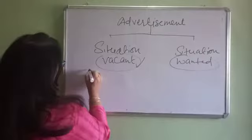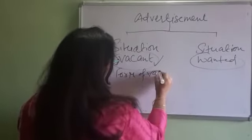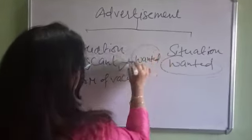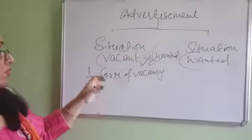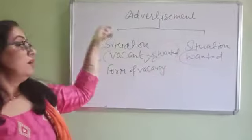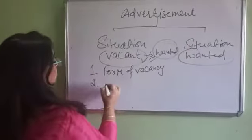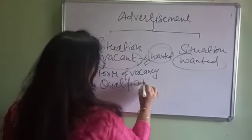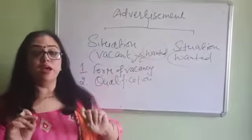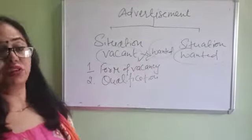Now, thinking about the points for situation vacant: the first thing is the form of vacancy — which kind of vacancy is there. It starts with 'wanted', meaning which kind of candidate they want. For example: 'wanted a teacher', 'wanted a receptionist', 'wanted a manager', 'wanted an accountant'. The second thing is about the qualification required in the candidate. Everything should be written in the third person — you are not making full sentences.